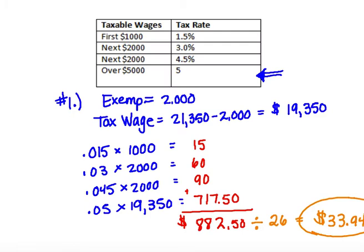Welcome back. In number one on page 136, we again reach the fourth tier once we take the exemptions out. The total salary was $19,350, which takes us to tier four. We walk through the system just like Amy's paycheck: 1.5% at $1,000, 3% at $2,000, 4.5% at $2,000, and then 5% of what is left — which is $14,350 after removing the first $5,000. That gives us a total state tax of $882.50, divided by 26 pays for a total of $33.94 per pay.